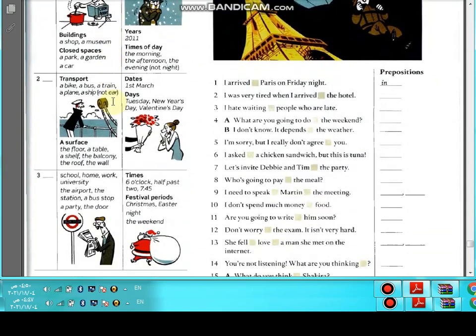Number two, with transport like a bike, bus, train, a plane, a ship, another car. A surface, a floor, a table, a shelf, a balcony, the roof, the wall. What do we use with this? Yes, we use on. With days, first of March, with days, days of week or some specific days, Tuesday, New Year's Day, Valentine's Day. So we use here on.